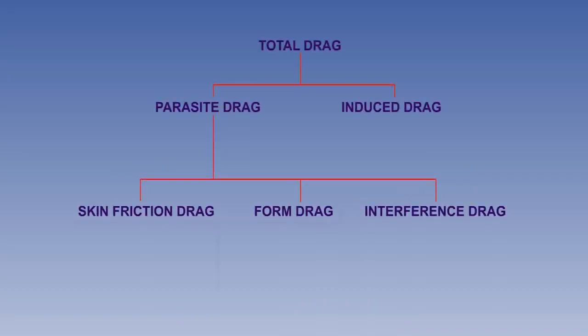The combination of form drag and skin friction is known as profile drag, as it can be considered that it results from the cross-sectional area, or profile of the aircraft, presented to the relative airflow.